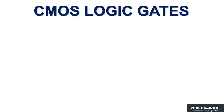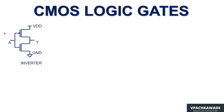Welcome back to our tutorial on digital electronics. Today we have a new topic called CMOS logic gates. This is a schematic representation of a CMOS inverter, which consists of two devices: a PMOS and an NMOS. They are complementary transistors, and therefore we call it CMOS. We will now see how this circuit acts as an inverter.